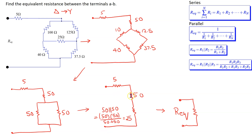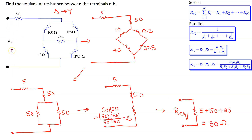Finally, we have the 5 ohm, the 50 ohm, and the 25 ohm resistors in series. The final equivalent resistance becomes 5 plus 50 plus 25, which equals 80 ohms. Thus, from the point of view of the terminals shown, the bridge circuit and this additional 5 ohm resistor are equivalent to a single 80 ohm resistor.